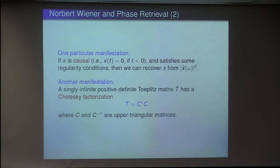If X is a causal function, that means it's zero on the negative side, and then it's something else on the positive side, and if it satisfies some regularity conditions, then we can actually recover X from these intensity measurements. This follows from Wiener's work. Another manifestation: if I give you a positive definite matrix, then it has a Cholesky factorization, or causal factorization, into C star C. Both are manifestations of phase retrieval. The problem is, typically we cannot say that the signal is causal, and these regularity conditions are just not satisfied.